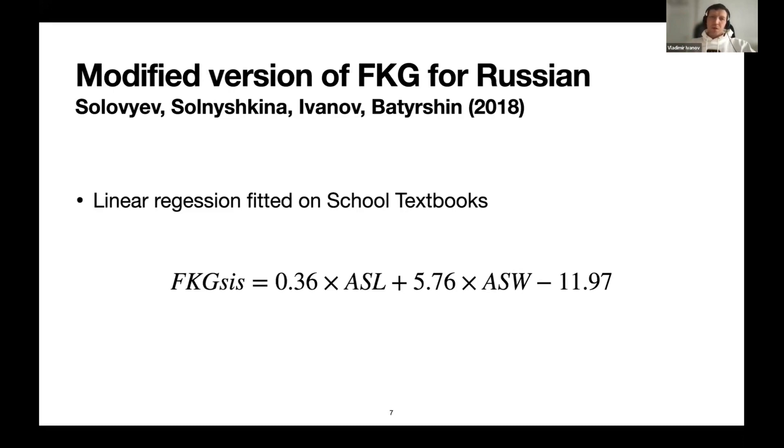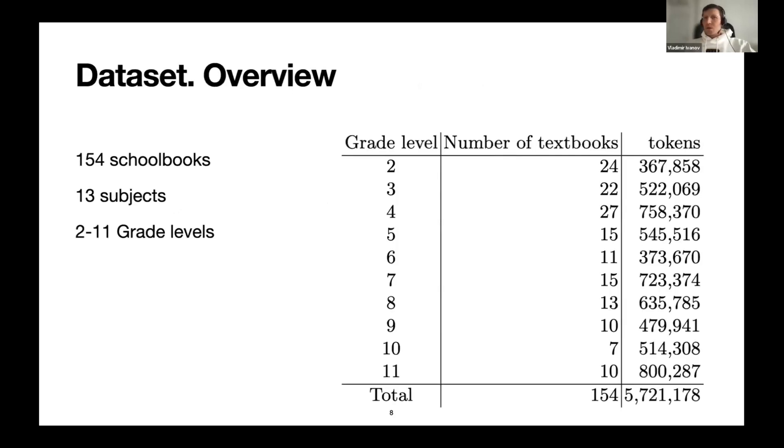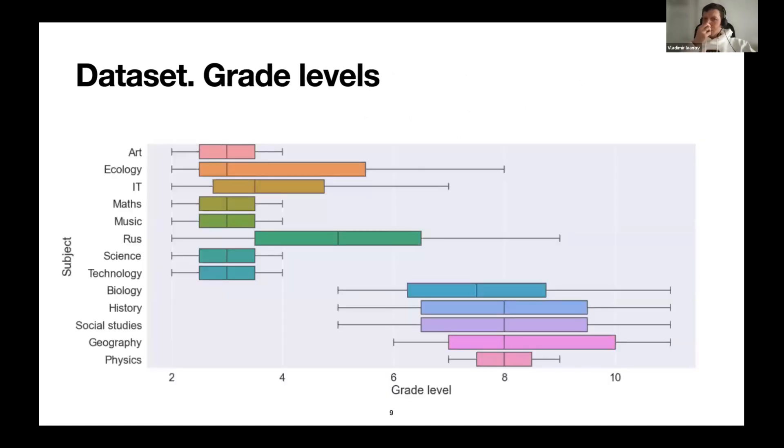Later on in this current study we presented results for a bigger corpus, trained on the big corpus and also appropriate for elementary school. The dataset here is a new dataset collected by a group in Kazan Federal University. It has 154 school books. You can see the distributions of number of textbooks, number of tokens. It includes grades from second till 11th and several subjects.